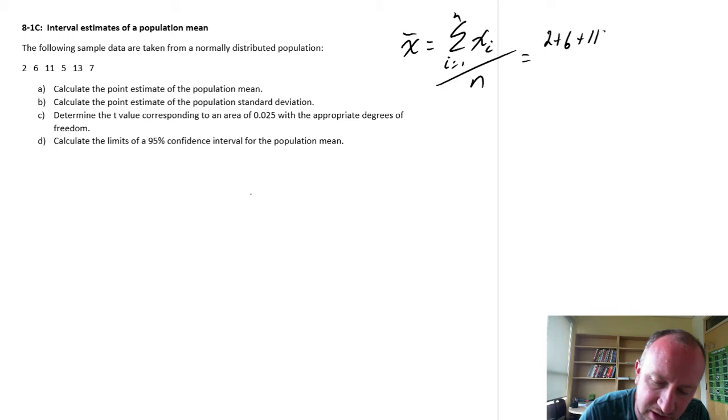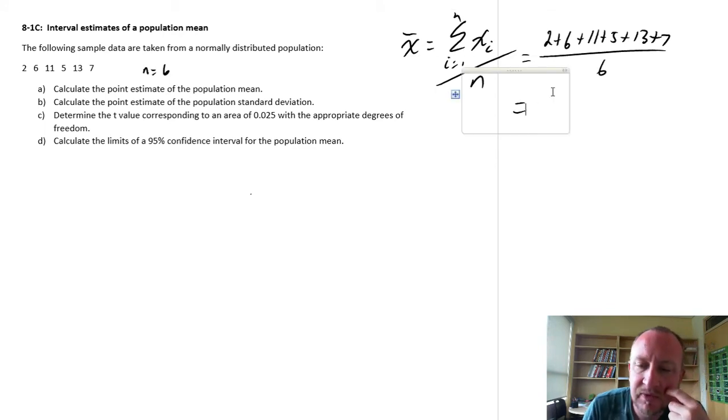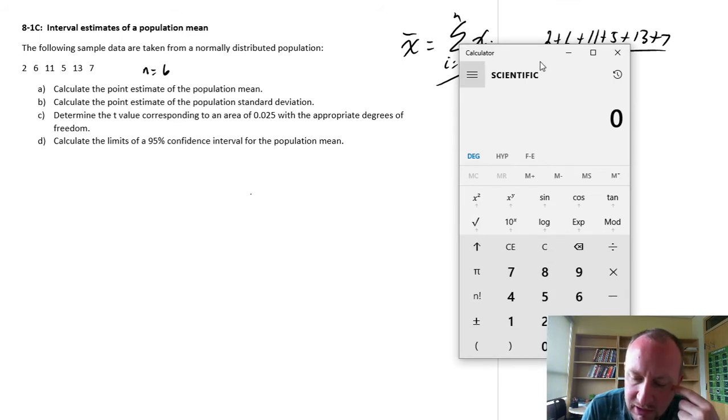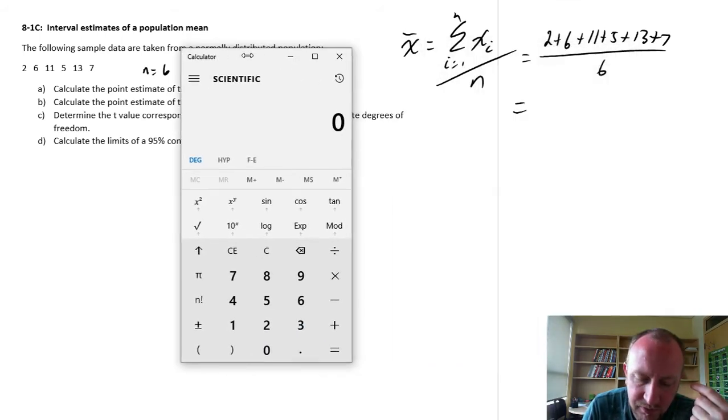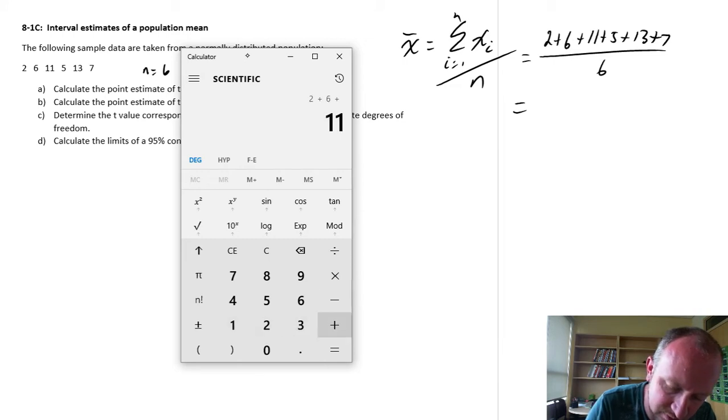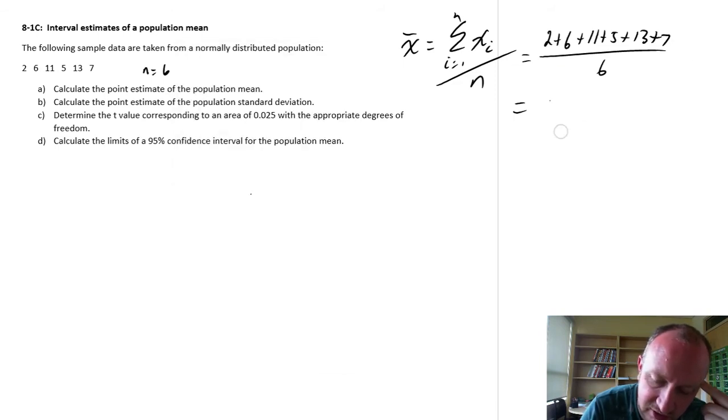Two plus six plus eleven plus five plus five, thirteen and seven. And divided by, I have n equals six observations. So we divide this by six. And now we grab our calculator here. So two plus six plus eleven plus five plus thirteen plus seven. That's 44 divided by six and we have seven and a third. So there's x-bar is equal to seven and a third.